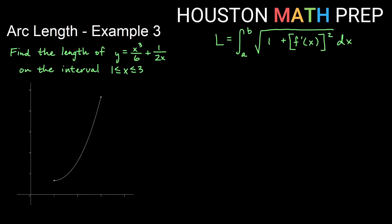So I've got my function, which is x cubed over six plus one over two x. Notice the x is on the bottom in the denominator. My interval is from one to three. So here's my a and here's my b.